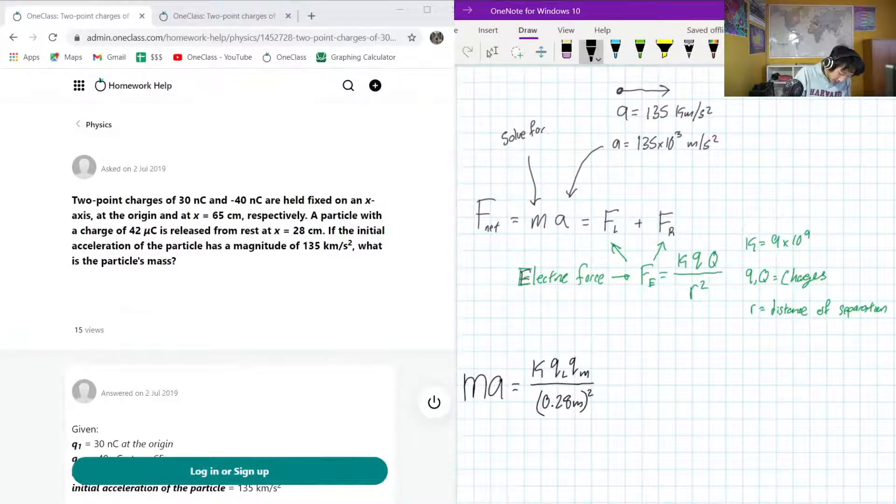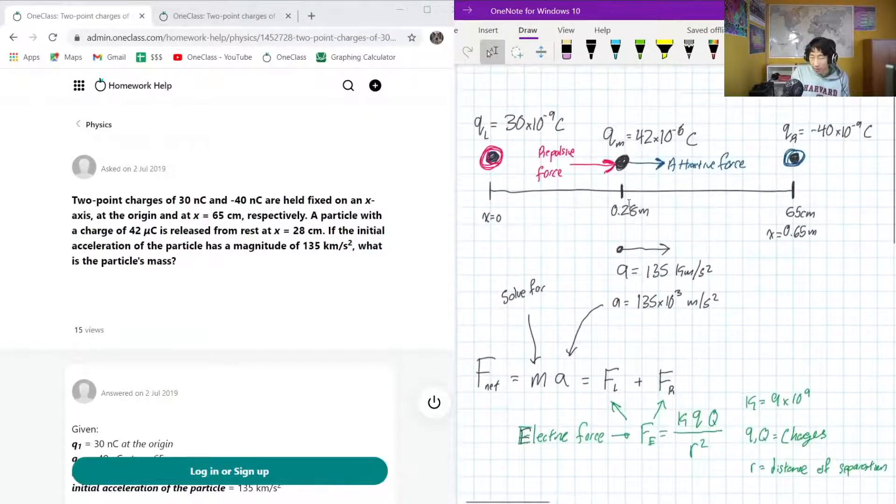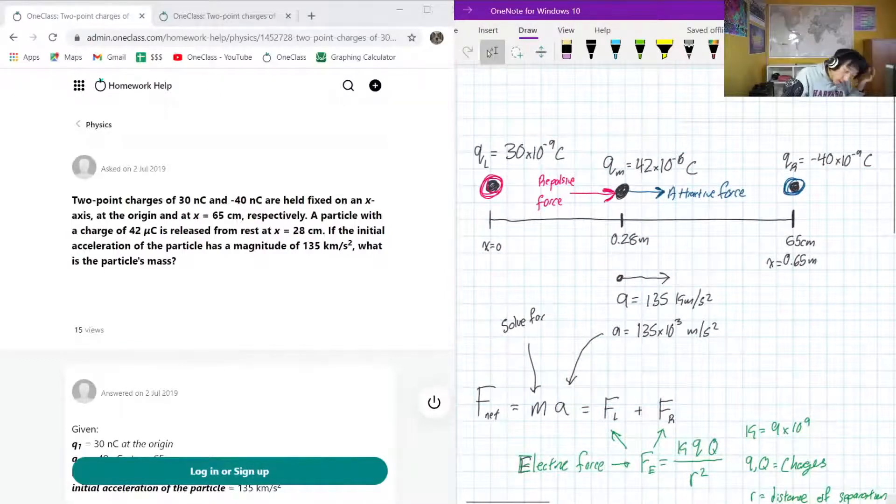0.28 meters. We've got to square that, don't forget it. Plus KQRQM. And we have to find the distance of separation between 28 centimeters and 65 centimeters. So, that is 37, I believe. I'm just going to double check that, because I can't always trust my math. 37 plus 28, 65. Okay.